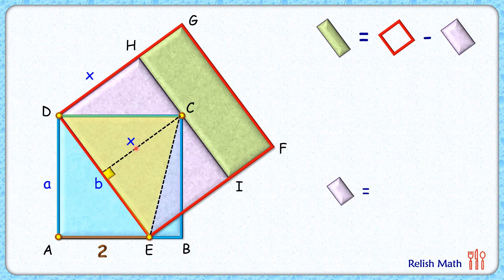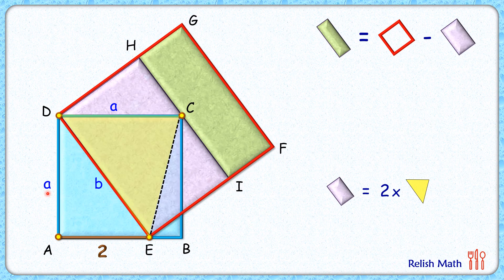Now, using the same yellow triangle but this time taking DC as the base, DC has length 'a' centimeters. Drawing an altitude from point E to DC, this altitude length equals the length AD, which is also 'a' centimeters.